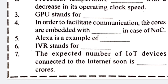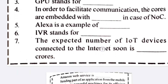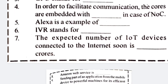Number four: in order to facilitate communication, the cores are embedded with — the correct answer is 'router' (R-O-U-T-E-R) in case of NoC. Number five: Alexa is an example of NLP — Natural Language Processing. IVR stands for Interactive Voice Response.